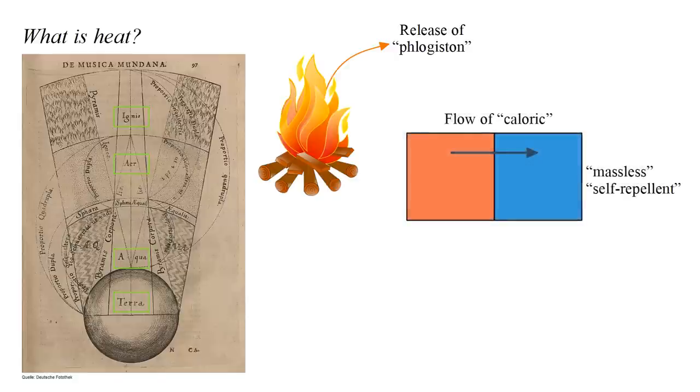In 1783, Antoine Lavoisier proposed that heat, as distinct from fire, was due to the presence of a substance called caloric. The more caloric an object contains, the hotter it is.